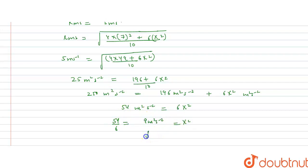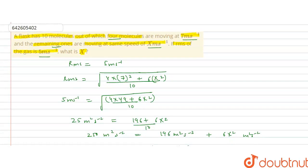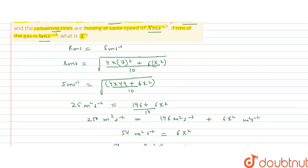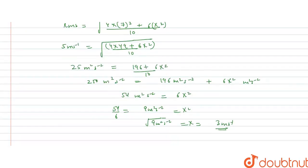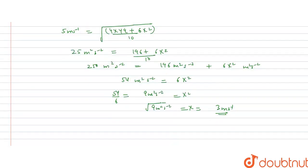Taking the square root of 9 meters squared per second squared gives x equal to 3 meters per second. So the remaining 6 molecules are moving at x equals 3 meters per second. The correct answer to this question is x equals 3 meters per second. I hope you understood the solution. Thank you.